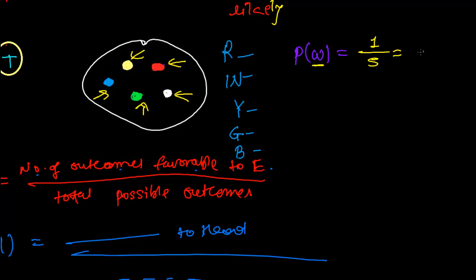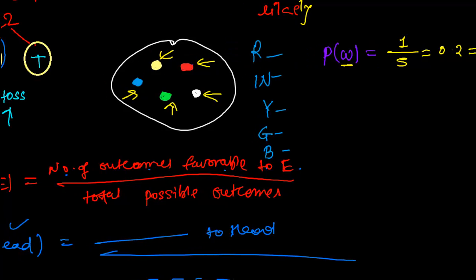If you want to find out the probability, it is 20%. So like this you can find out probability easily for green or for any color you suppose. Like this we used to find out the probability in the theoretical approach.